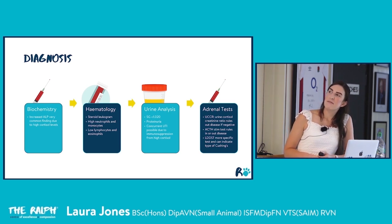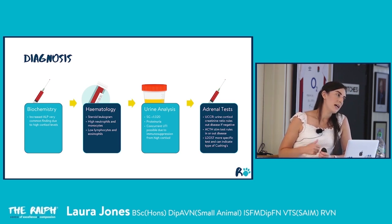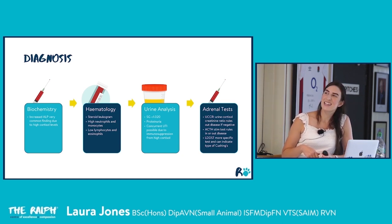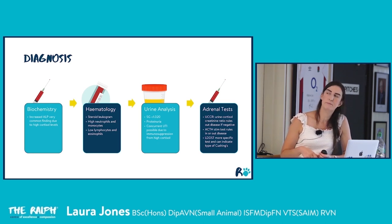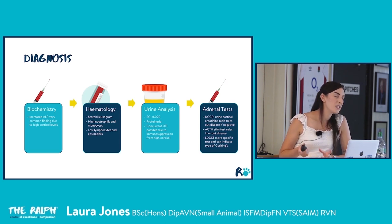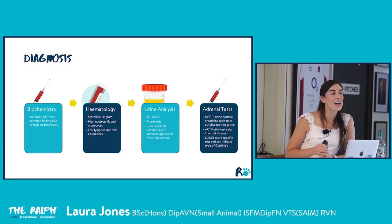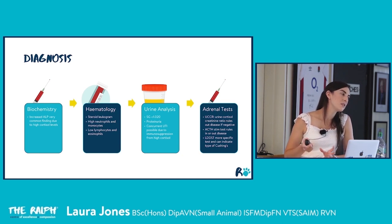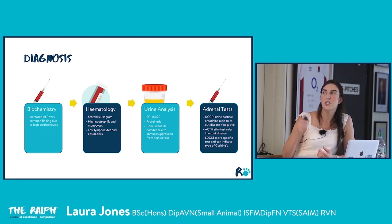Diagnostics for Cushing's primarily involve blood work and urine analysis. Biochemistry commonly shows markedly increased ALP. Urine analysis typically shows a low specific gravity and may show proteinuria. These patients are also predisposed to UTIs because high steroid levels cause immunosuppression and the urine is often dilute.